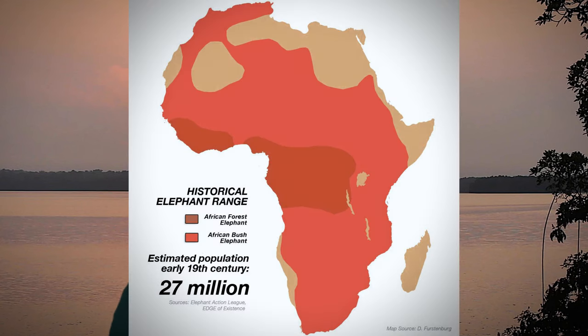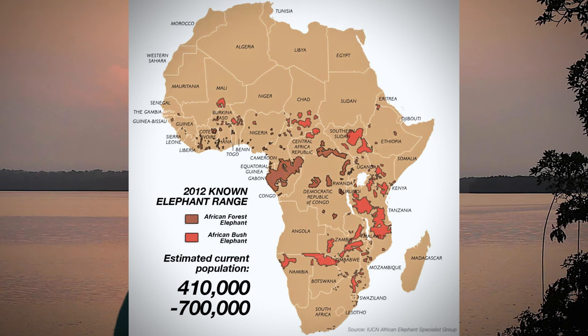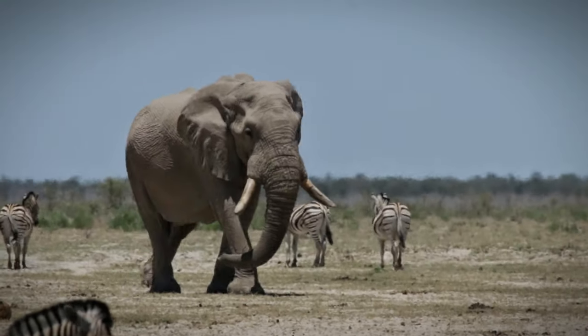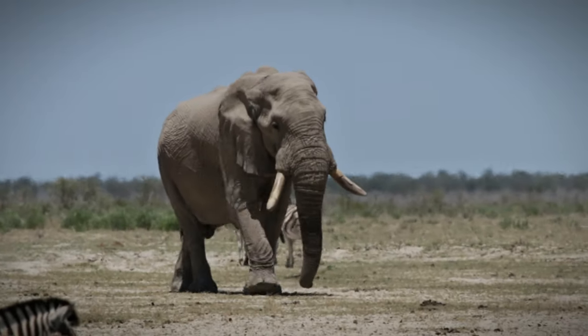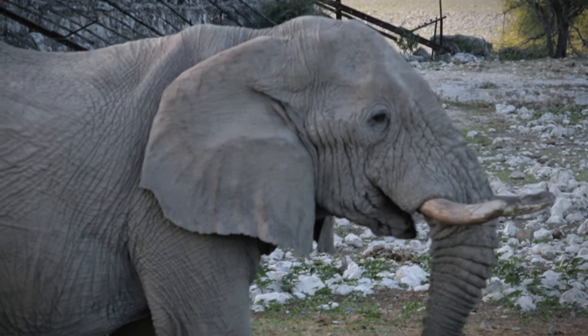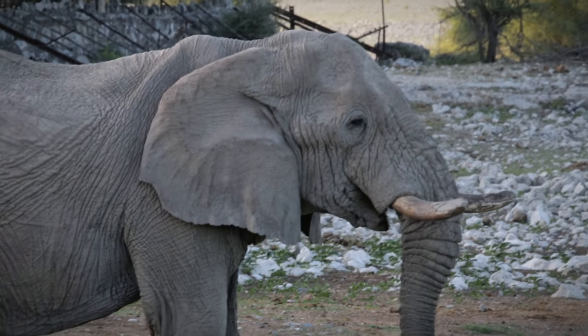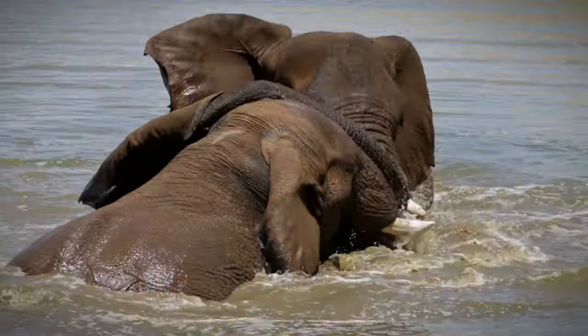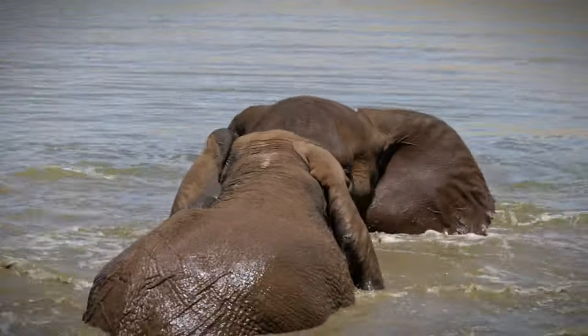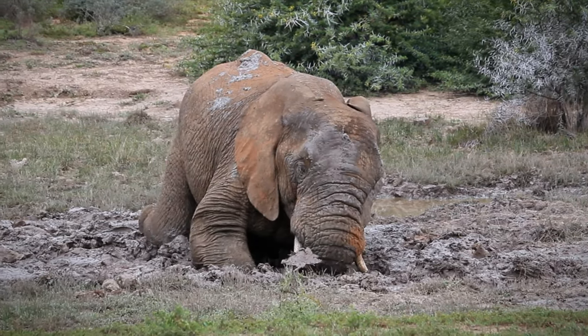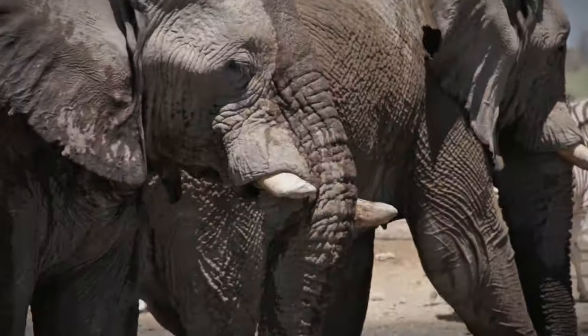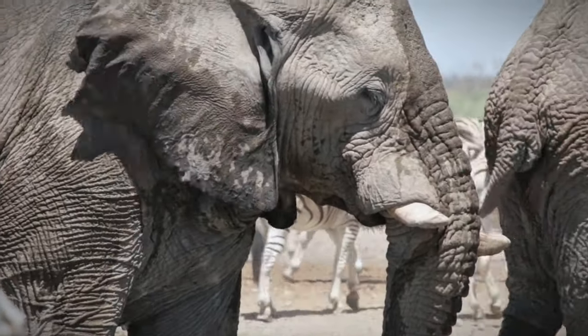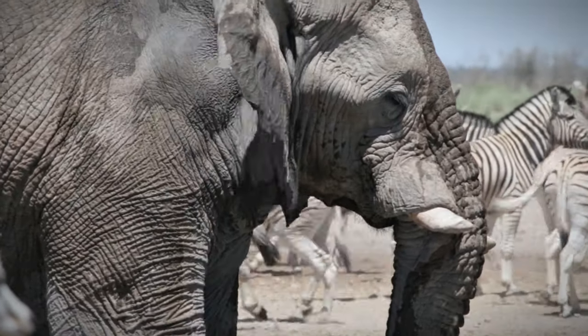The numbers have declined from 27 million in the 19th century down to an estimated 410,000 to 700,000 because of illegal hunting for ivory tusks, which are sold on the black market for huge sums of money. A tusk is an extended tooth used to protect the trunk, for fighting and defence among males, to rest their trunk on, and in the dry season to dig for water. Elephants actually have a dominant tusk — you can tell which one because it's usually the longer one, as the less dominant tusk wears down over time.